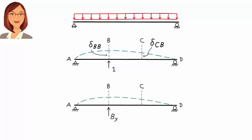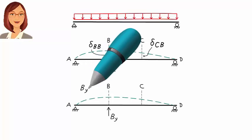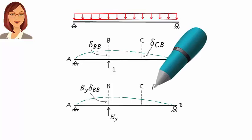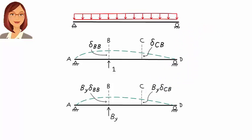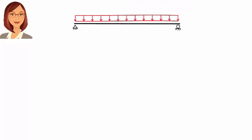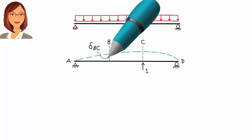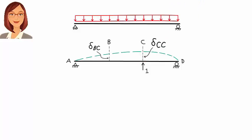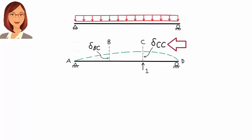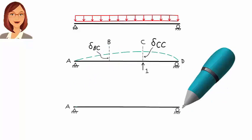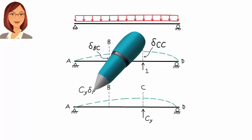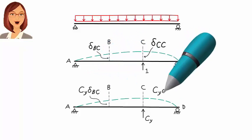Now, if we replace the unit load with B-Y, these displacements can be written as B-Y·delta BB and B-Y·delta CB. Next, we consider the effect of C-Y on the beam. If we place an upward unit load at C, the beam deforms, giving displacement delta BC at B and delta CC at C. Delta BC is the displacement at B due to the unit load at C, and delta CC is the displacement at C due to the unit load at C. If we replace the unit load with C-Y, the displacements become C-Y·delta BC and C-Y·delta CC.